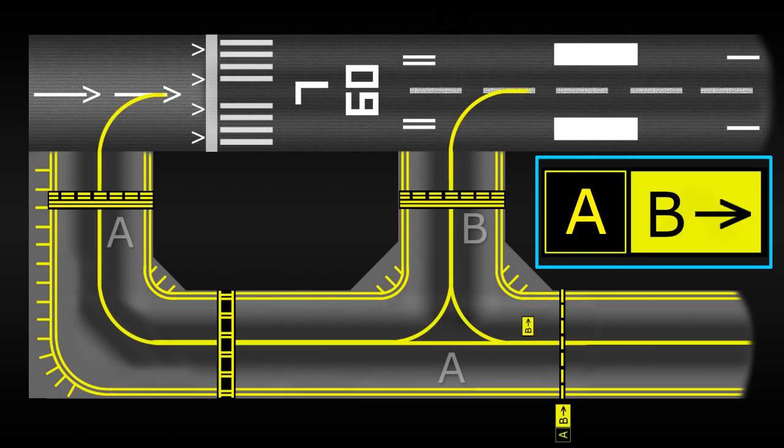Now, while we're focused around this Alpha-Bravo junction, let's have a look at how a holding point would be identified. More often than not, holding points are simply labeled with the taxiway that they're on plus a number.